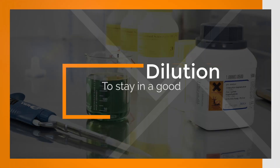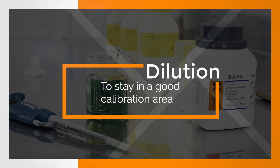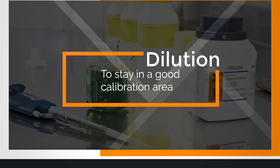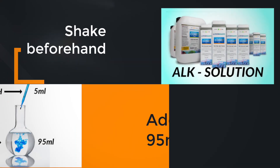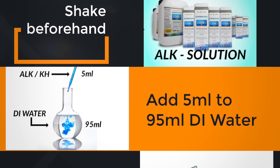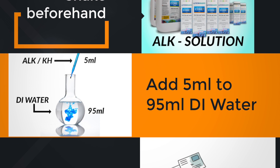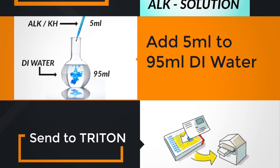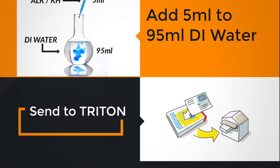For this, you take the alkalinity liquid, shake it, take 5 millilitres out of it, and dilute it in 95 millilitres of DI water. Then you can send it in and wait for the results.